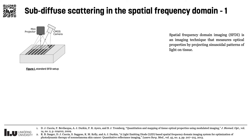The instrumentation needed is very simple. A digital projector is used to shine sinusoidal patterns on the tissue, and a sensor, like a CMOS camera, is used to measure the reflectance of the tissue.